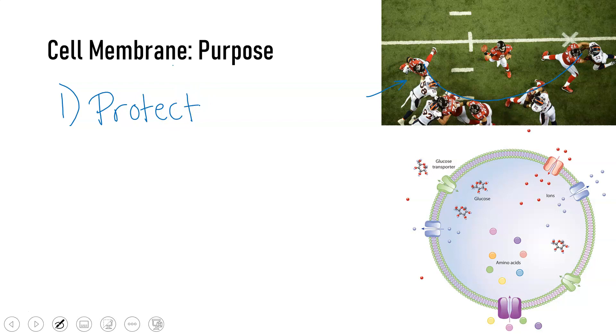Another job of the offensive line is to let people like running backs or the quarterback in and out of the pocket. Similarly, the cell membrane's job is to regulate what goes in and out of the cell.